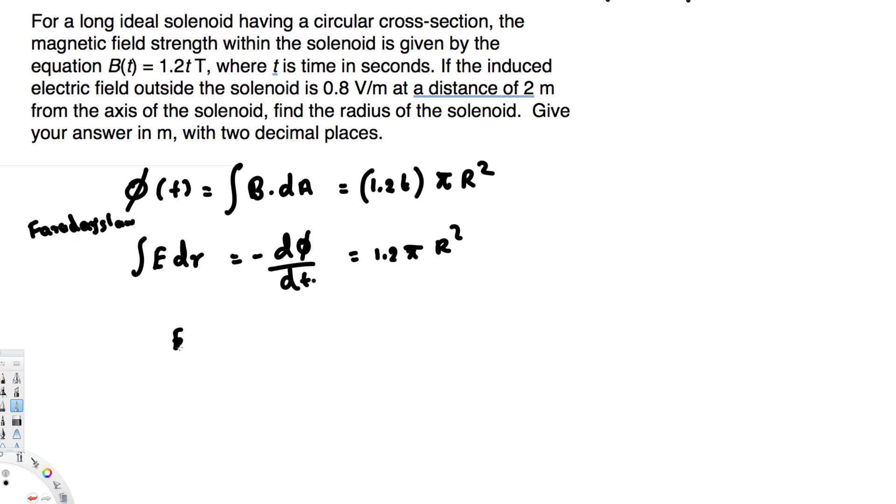From this one, this is going to be equal to E times 2πr, because the length of the circle, the circumference, is going to be 2πr. And that is equivalent to 1.2πR².